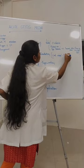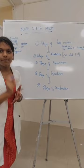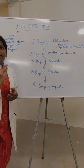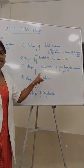Next, about the stage of suppuration. Due to prolonged exudation, pus will get filled in the middle ear, which begins to exert pressure over the tympanic membrane. There will be a bulged-out tympanic membrane at the stage of suppuration. In this stage, myringotomy is indicated.